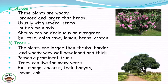The next group is trees. These plants are larger than shrubs — harder and woody, very well developed, and thick, possessing a prominent trunk. Trees can live for many years. Here in this picture we can see the prominent main trunk and the side branches. A tree can attain a height of more than 10 meters. Examples are mango, coconut, teak, banyan, and oak.